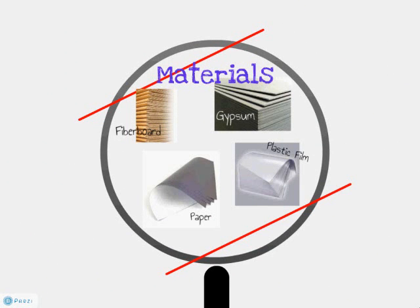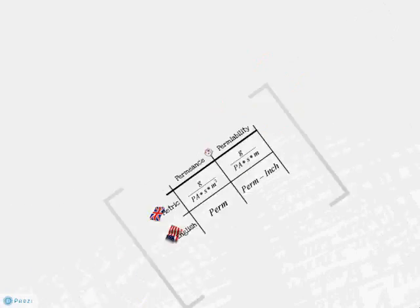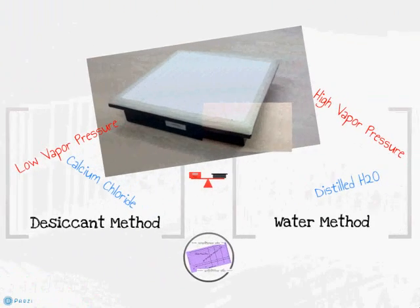There are two basic methods for measuring the permeance of materials such as paper, plastic films, fiberboards, gypsum and plaster products: the desiccant method and the water method. Both methods utilize a test dish where the material under test is placed and sealed to the dish opening.